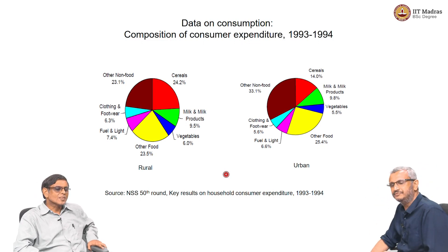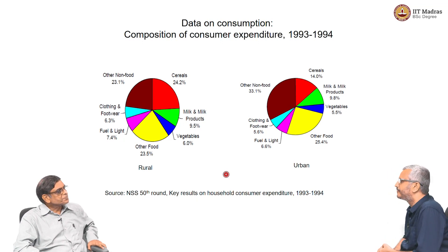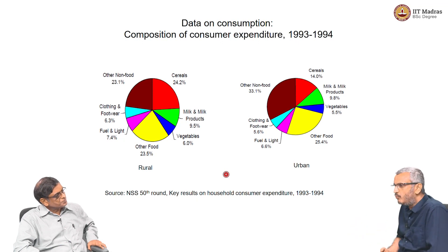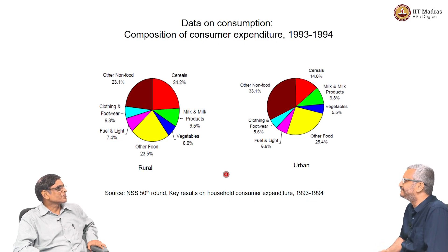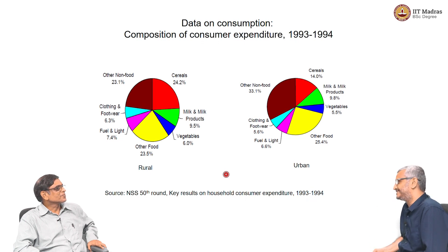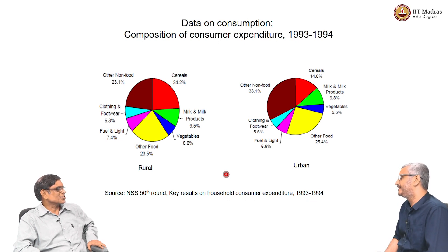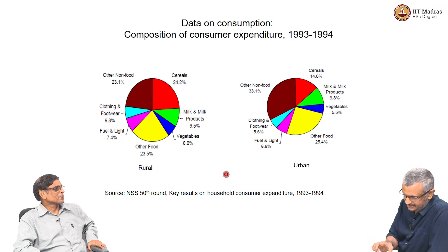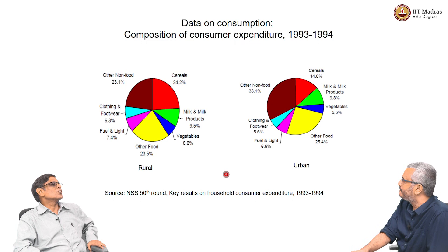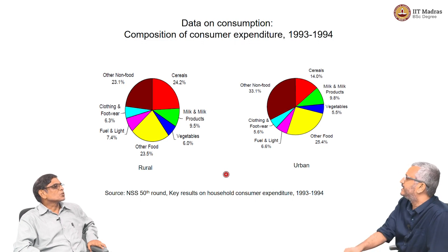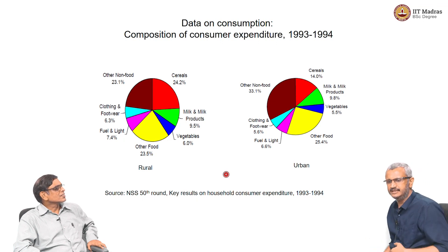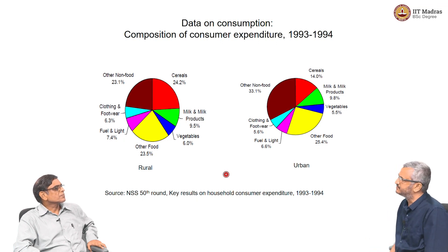The second issue with most consumption data is what we call recall bias. Suppose you ask me what I consumed in the last one month — I will not be able to recollect everything and will put some approximations. If you ask what I consumed last three months, my recall bias will be even greater. What NSS has done is measure consumption in a day, consumption in a week, and consumption in a month — to minimize this recall bias. Generally, I would say India's statistical system is very robust in terms of these surveys and we have a very well established network for that.